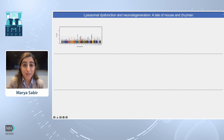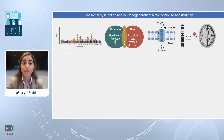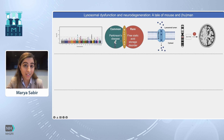Moreover, the mechanisms by which these genetic risk factors lead to disease need to be uncovered. Large population studies of Parkinson's disease have identified SLC17A5 as a genetic risk factor in PD patients.